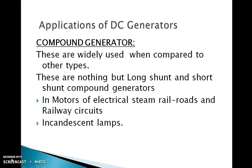Long shunt and short shunt compound generators are widely used in motors of electrical steam railroads and railway circuits. To summarize, the three types of DC generators are: the shunt generator, where the field winding is connected in shunt across the armature; the series generator, where the field winding is connected in series with the armature; and the compound generator, which uses a combination of shunt and series field windings connected across the armature circuit.